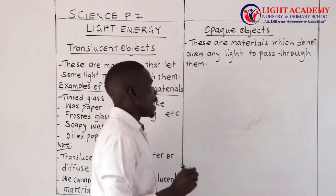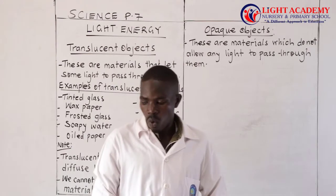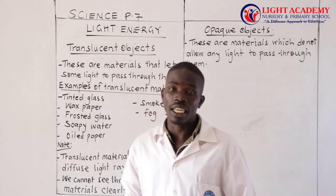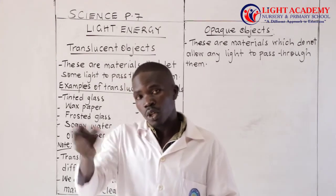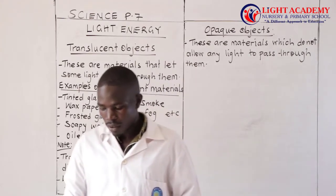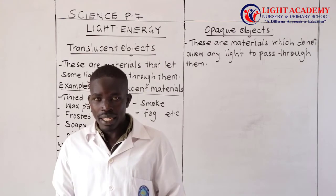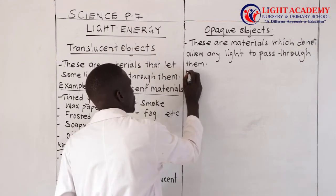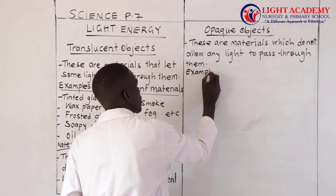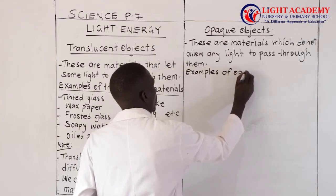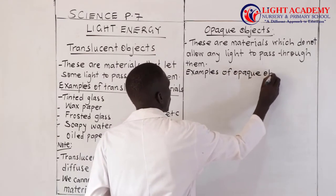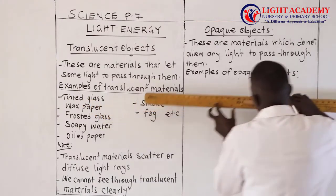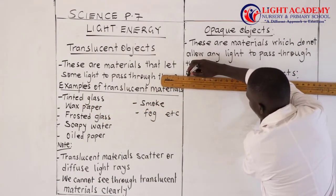When opaque materials are there, sometimes when light comes, you don't see anything — but a shadow is formed. Let us look at examples of opaque objects.